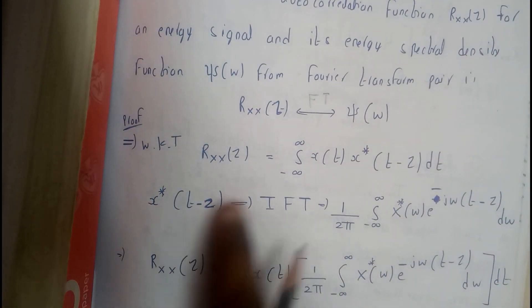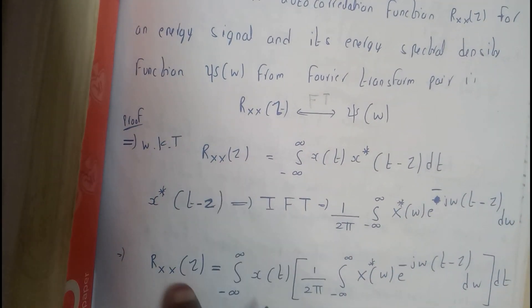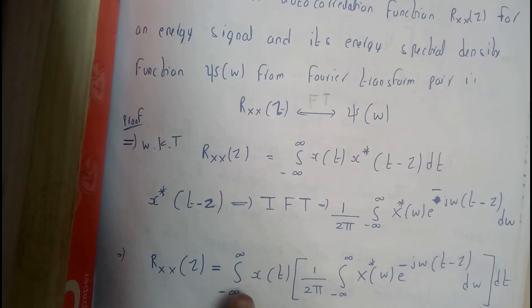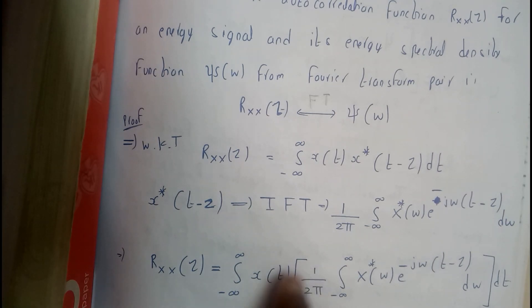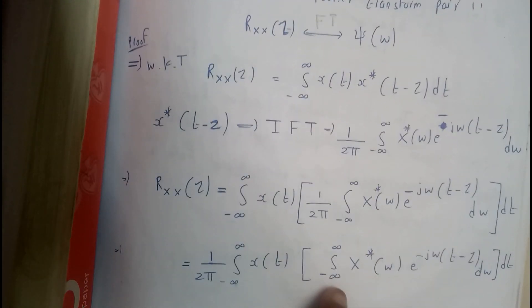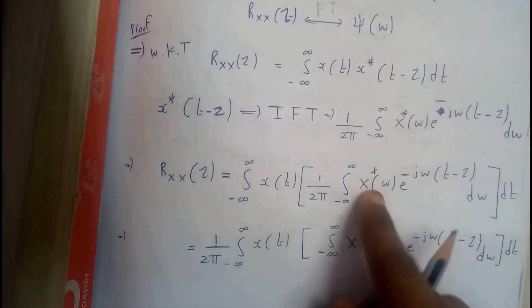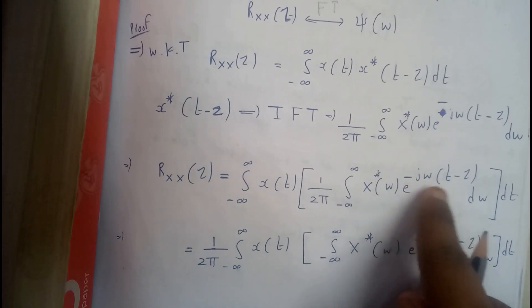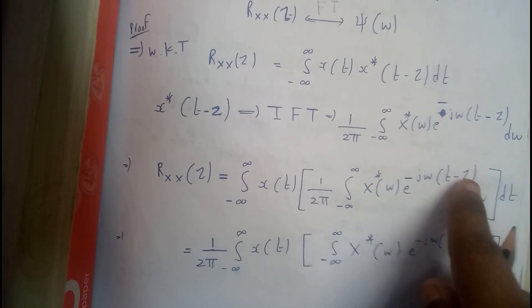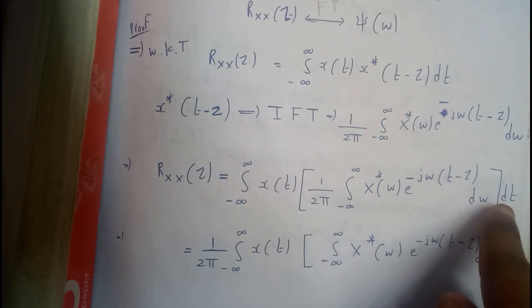So we can write Rxx of Z as equal to the integral from minus infinity to infinity of X(T) into 1 by 2pi integral from minus infinity to infinity of X conjugate of omega, e to the power of minus j omega (T minus Z), d omega, into dT.